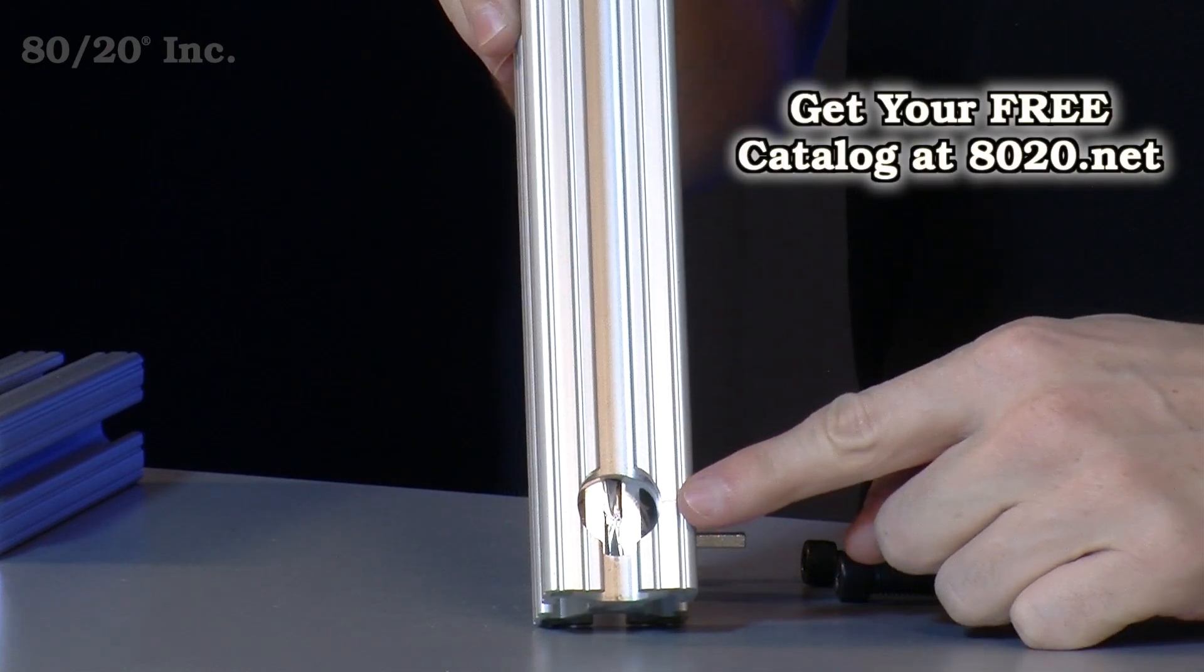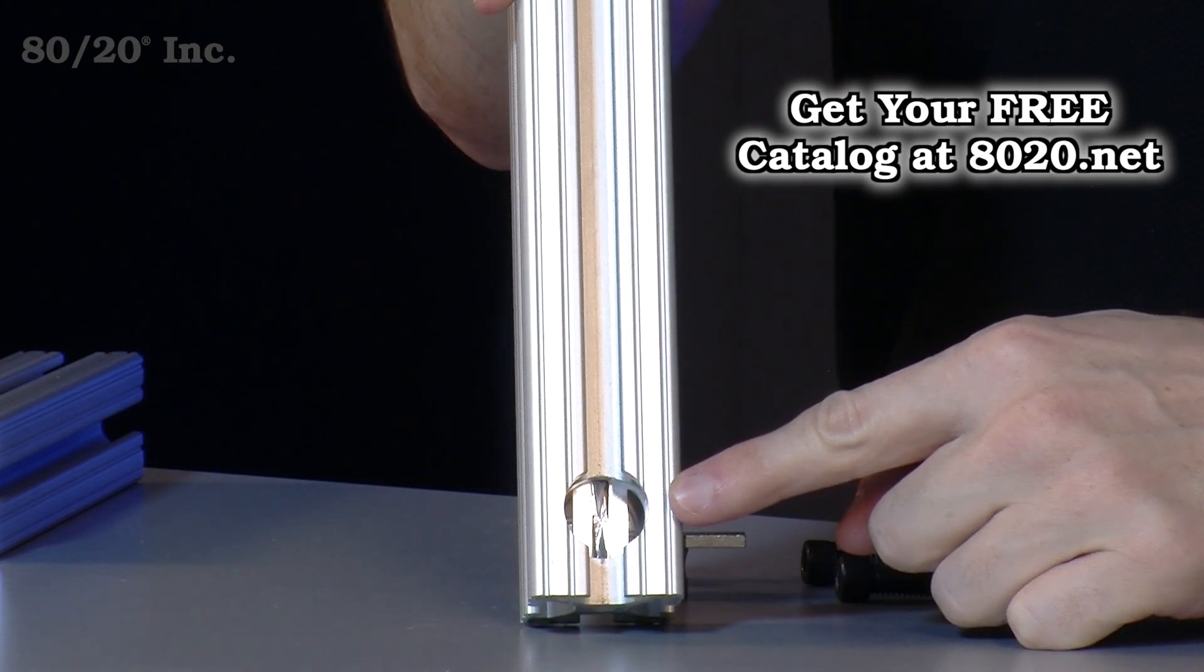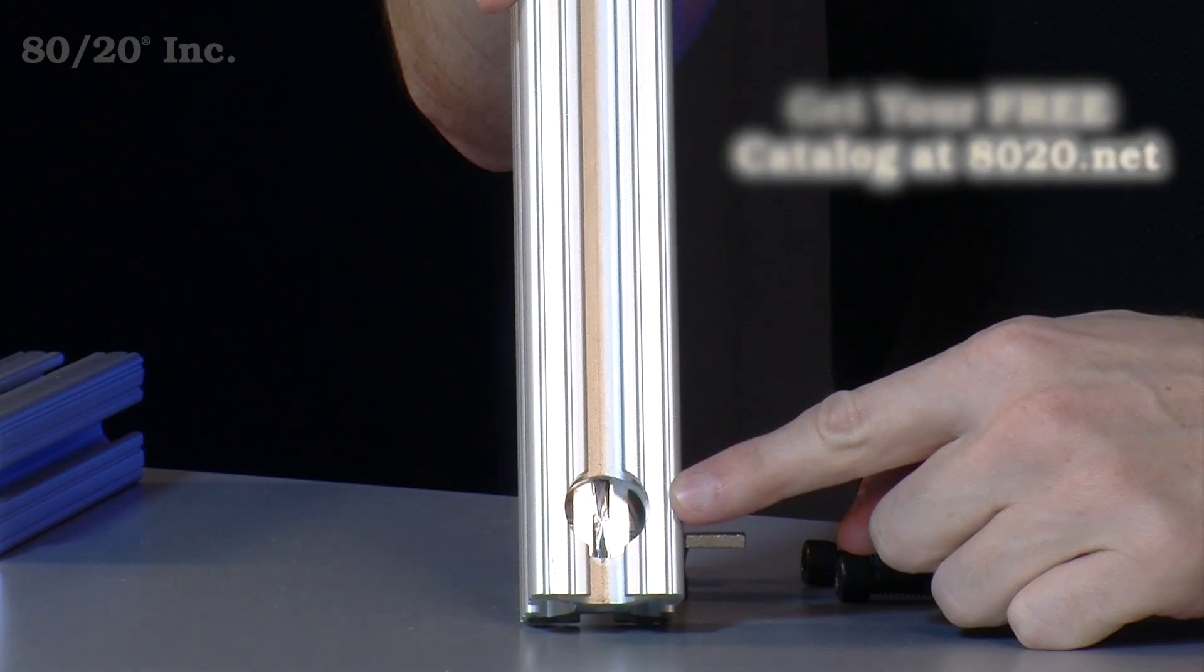Now one thing you'll want to keep in mind when using the double anchor fastener is you'll need a counterbore service into two sides of your bar. More information on the counterbore service can be found in the 8020 product catalog.